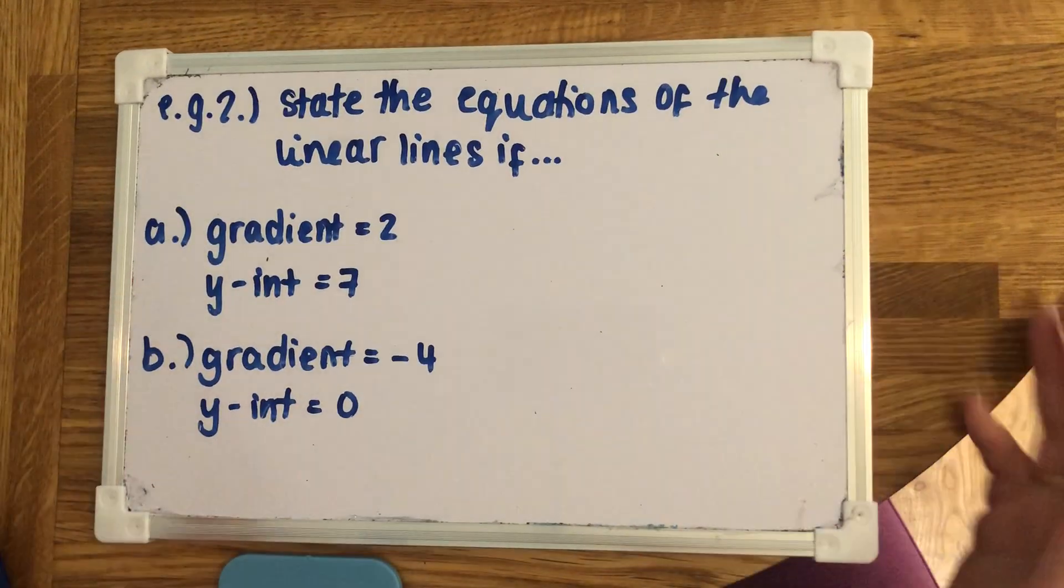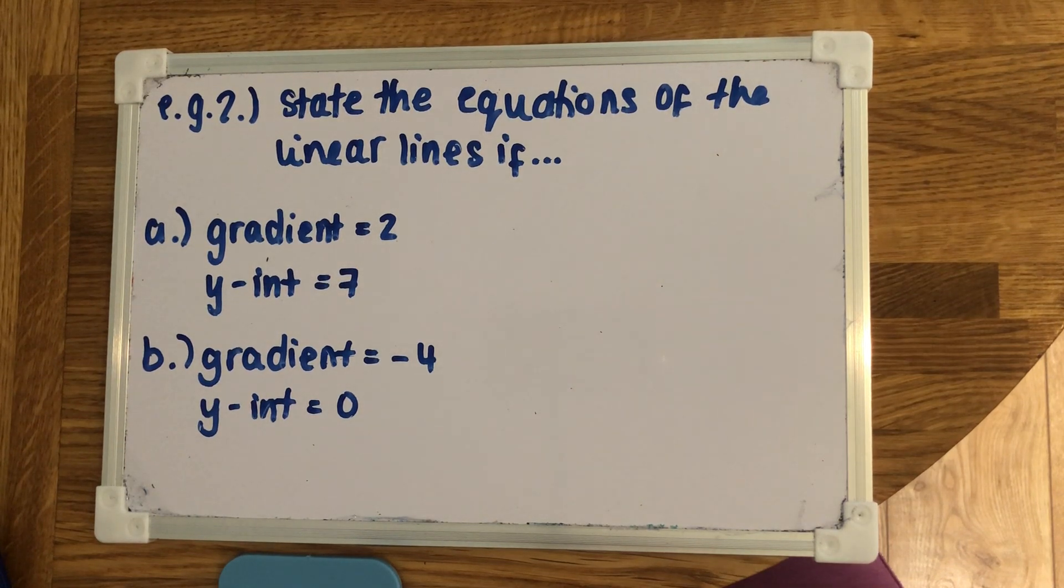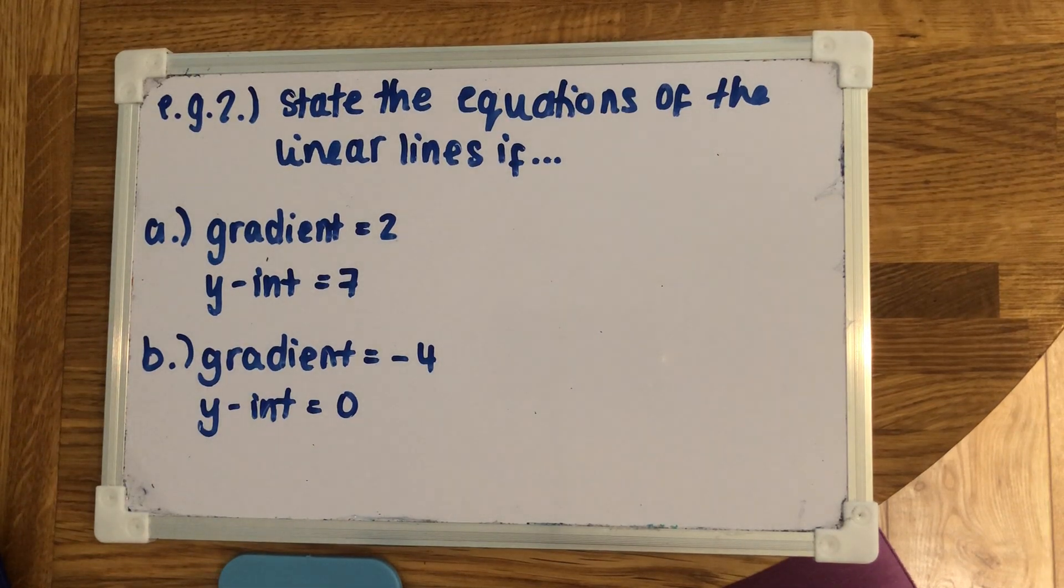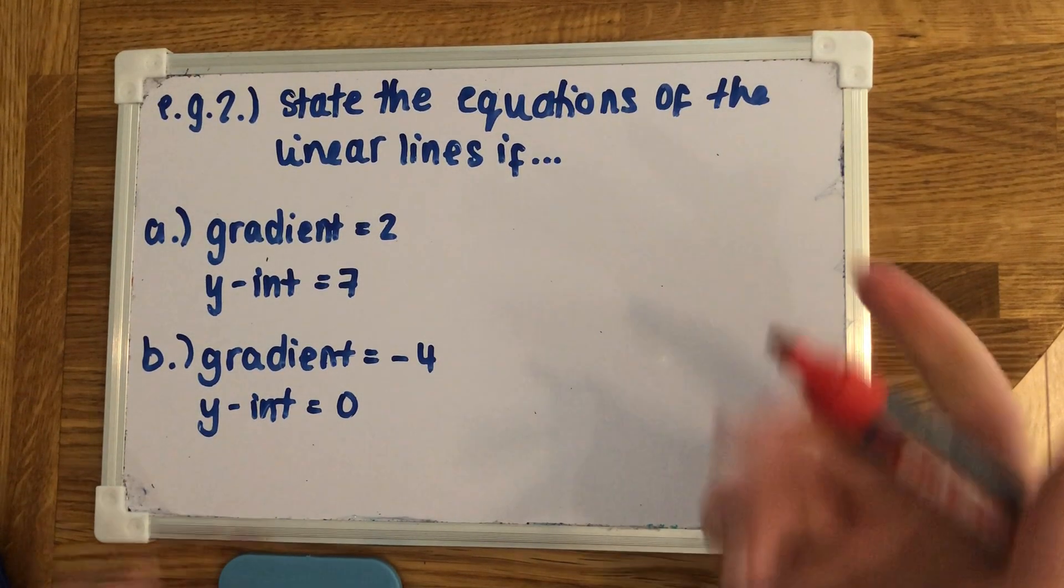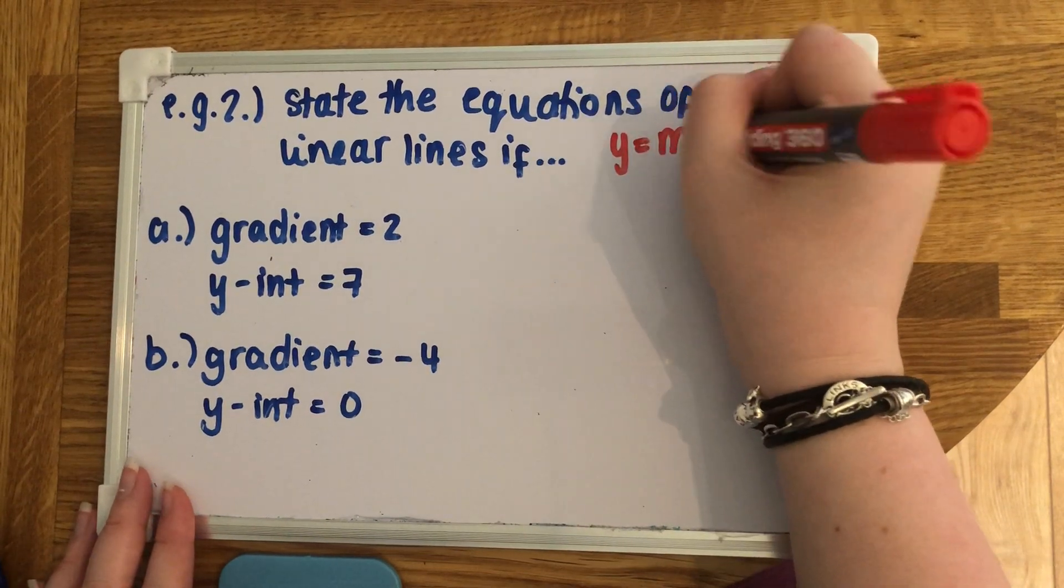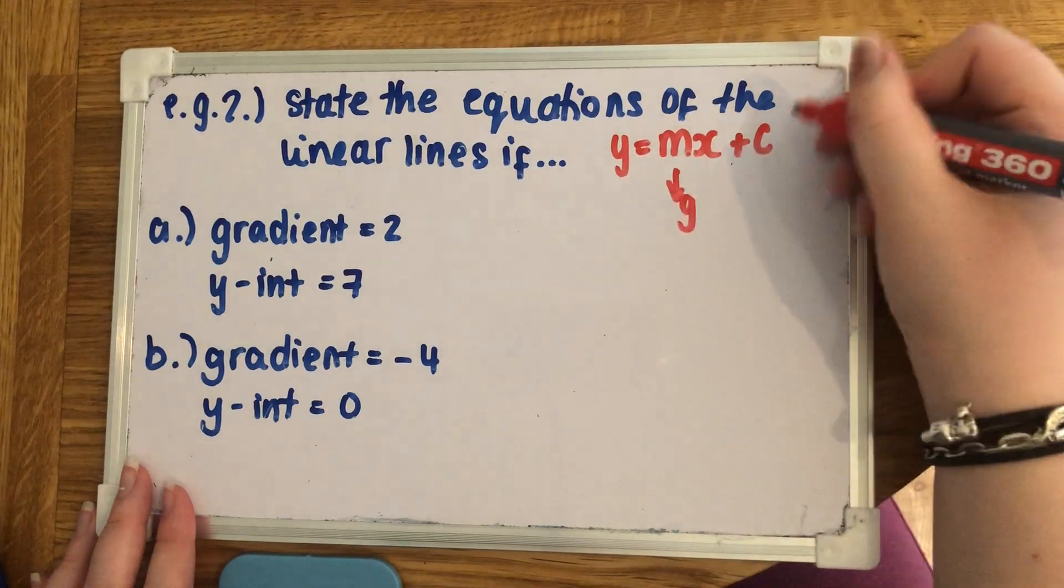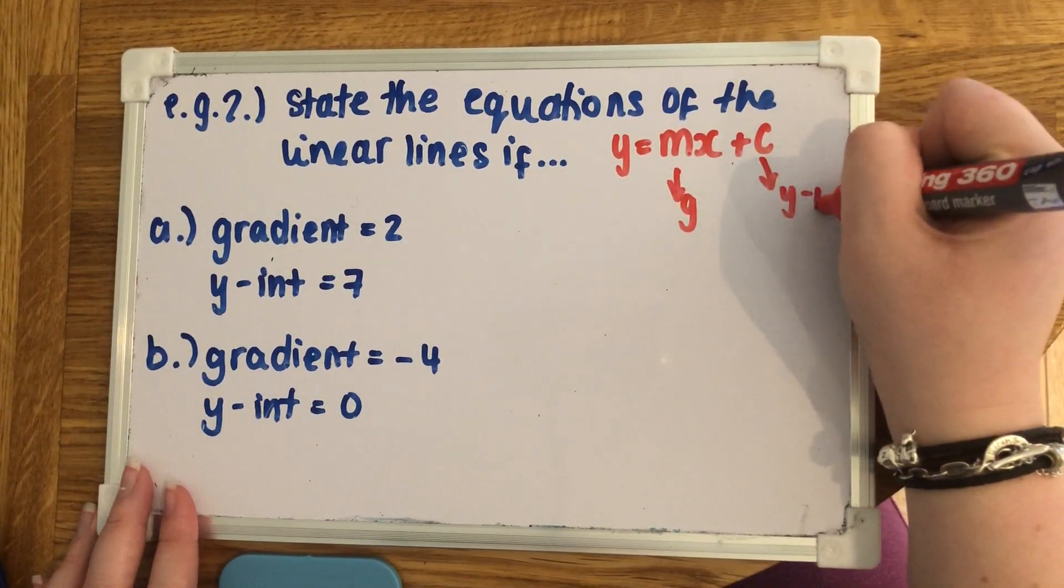These questions are asking for the reverse. So we're given the gradient and the y-intercept. We're expected to then put it all together and make the equation of the linear line. I will write here at the top. So every equation of a linear line looks like this. So this is your gradient. And this is your y-intercept.